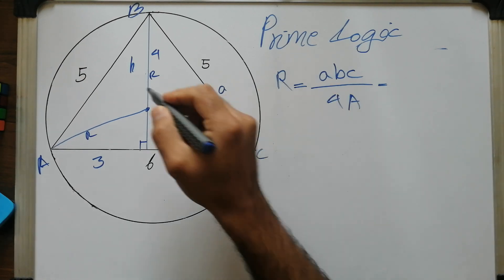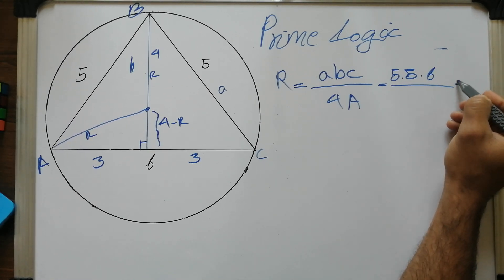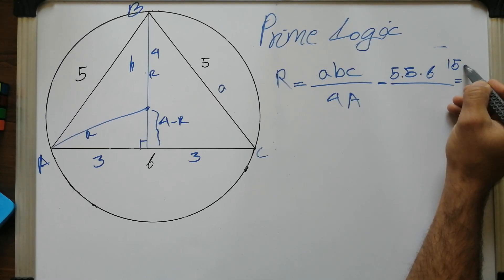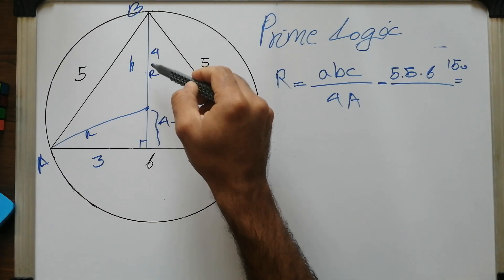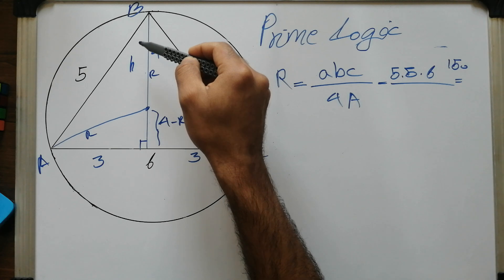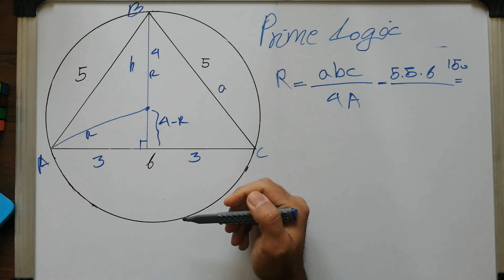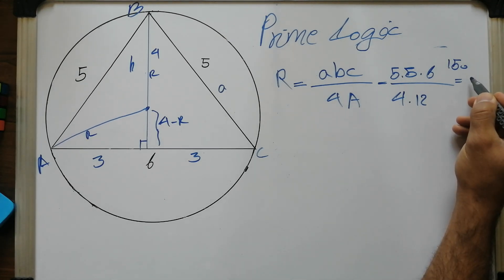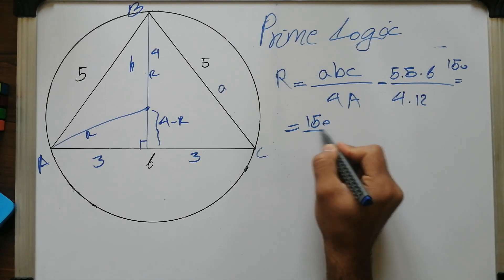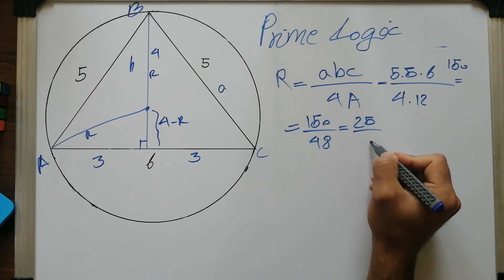Substituting: a·b·c = 5 × 5 × 6 = 150. The area of the isosceles triangle: height is 4, base is 6, so area = (1/2) × 6 × 4 = 12. Therefore 4A = 48, and R = 150/48 = 25/8. Same answer.